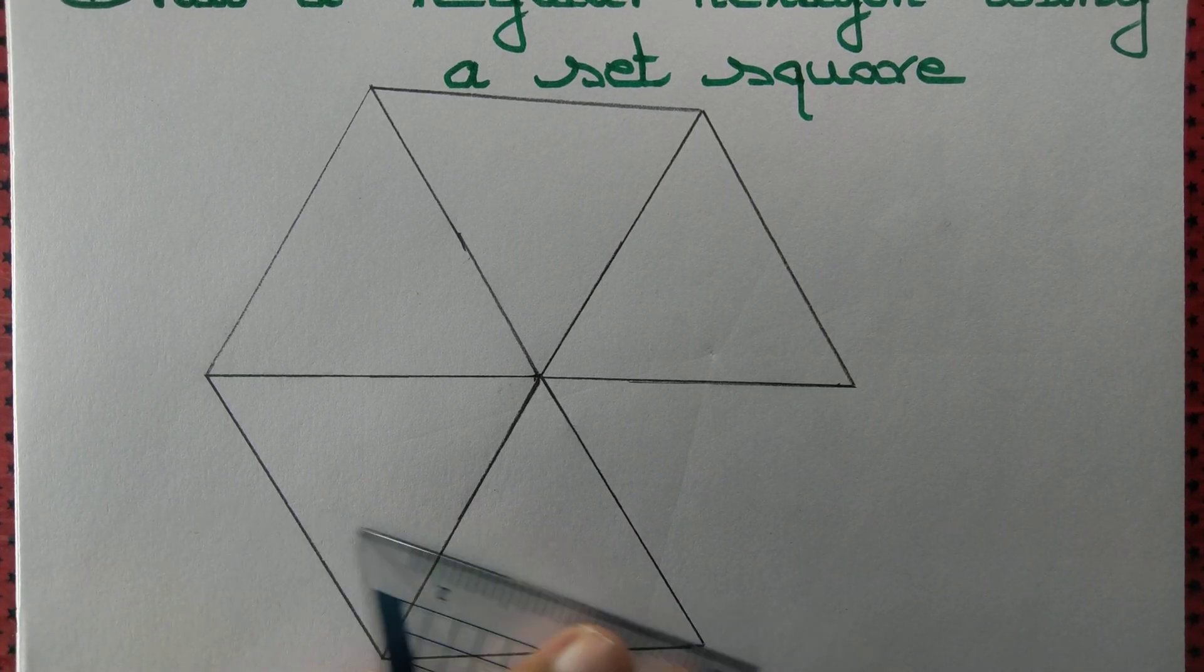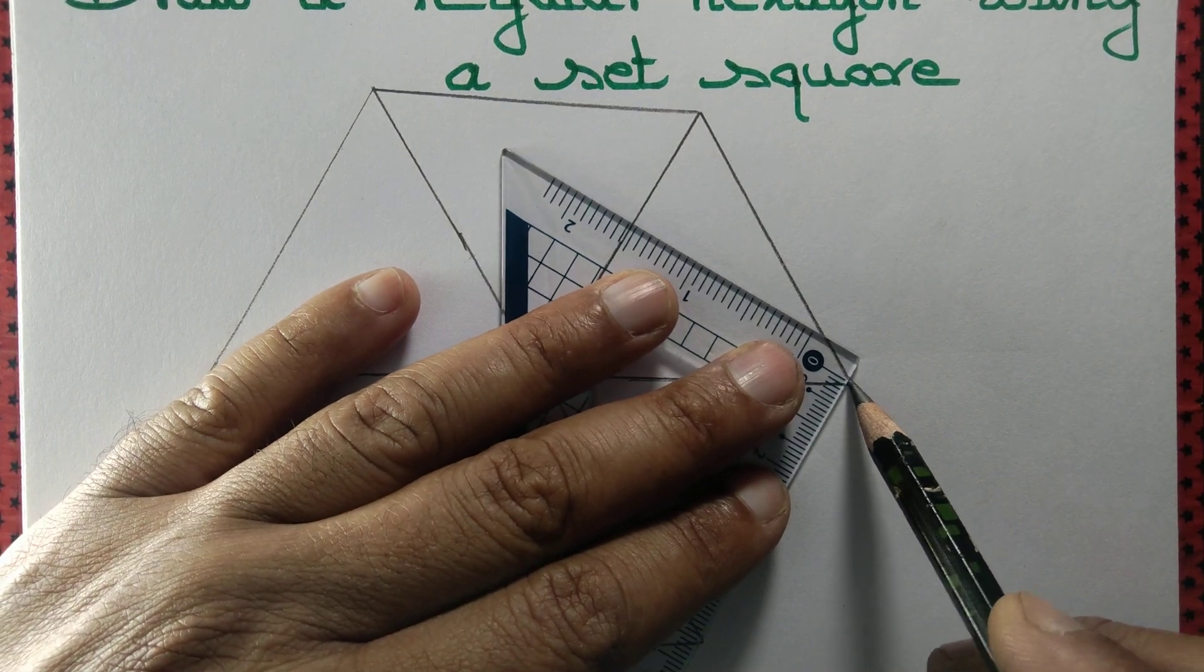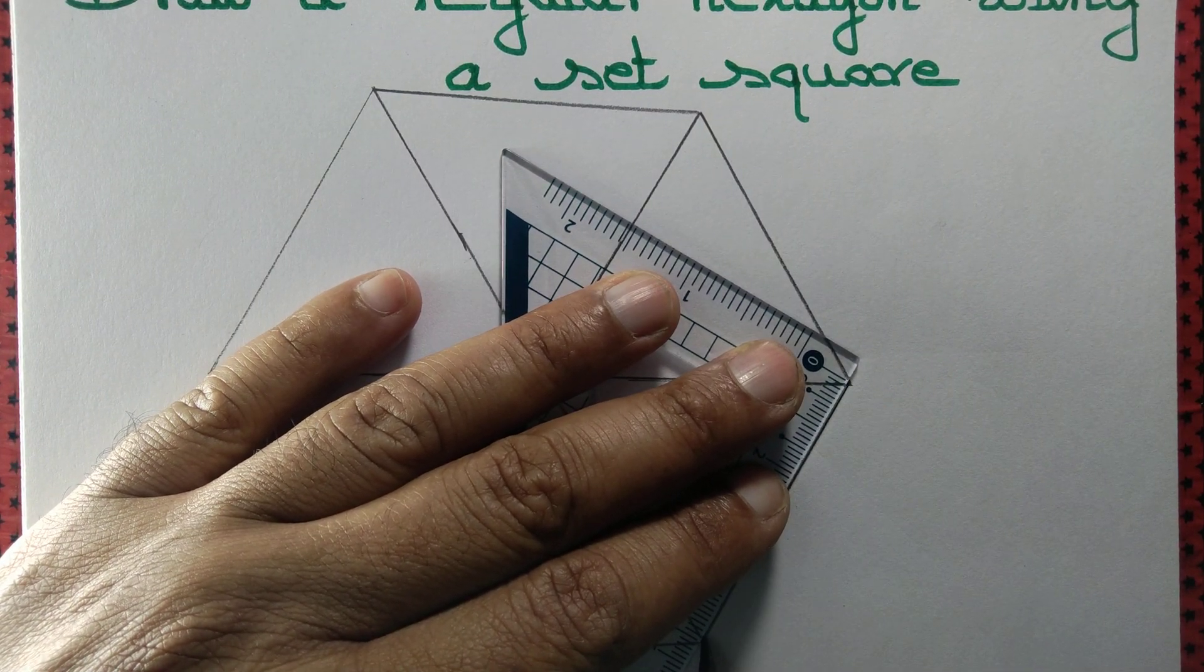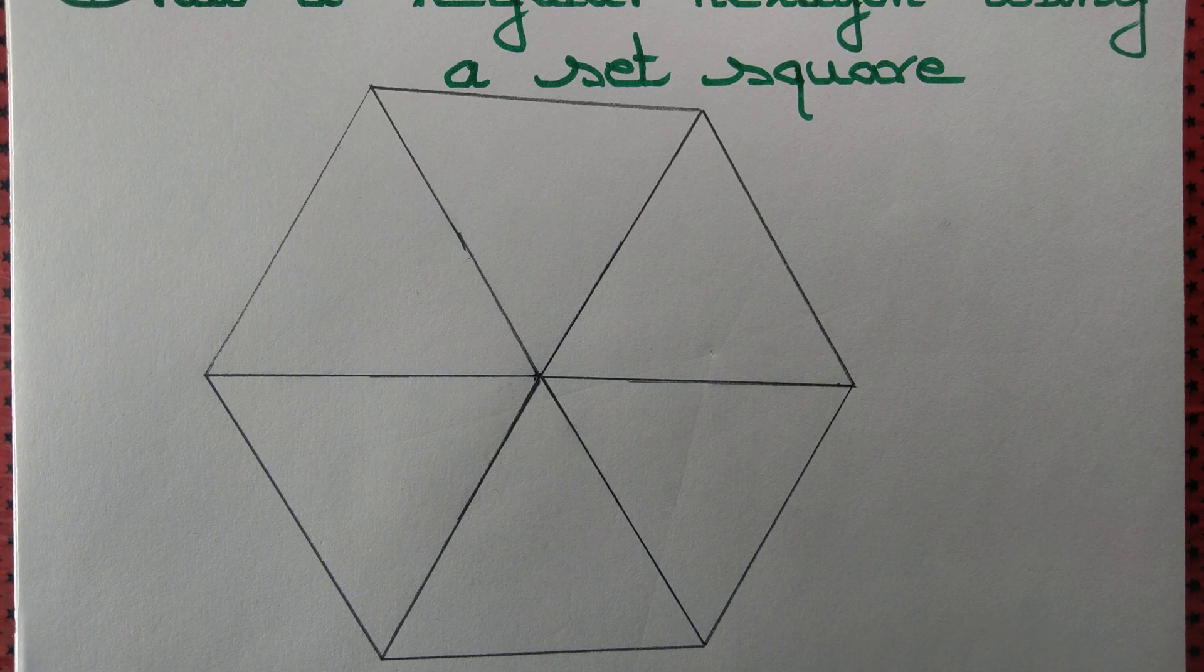We join the 5th side and 6th side. Observe that we get a regular hexagon.